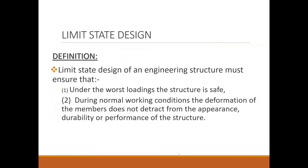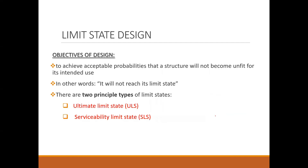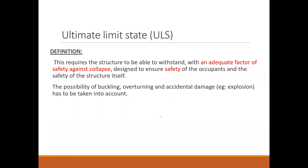Limit state design: the design of engineering structures must ensure that under the worst loading the structure is safe, and that during normal working conditions the deformation of members does not detract from the appearance, durability, or performance of the structure. Limit state is divided into two: ultimate limit state (ULS) and serviceability limit state (SLS). ULS requires the structure to withstand loading with adequate factors of safety against collapse, ensuring safety of occupants and the structure itself. Buckling, overturning, and accidental damage must be considered.